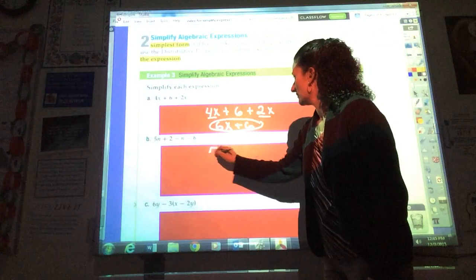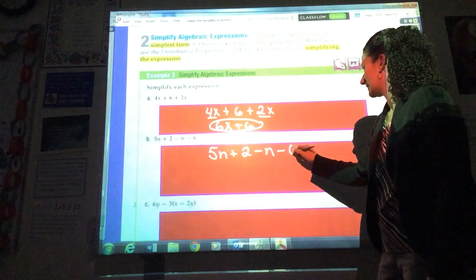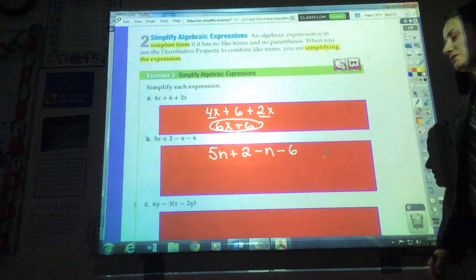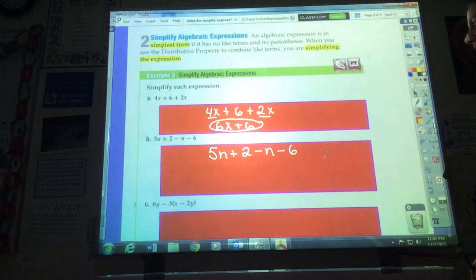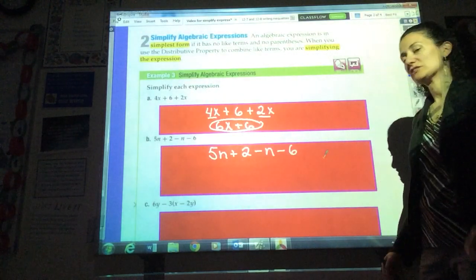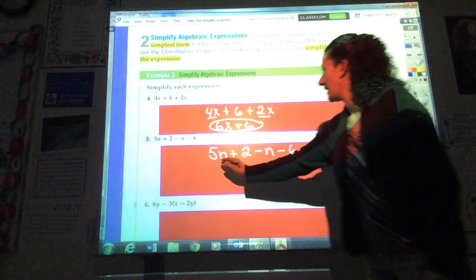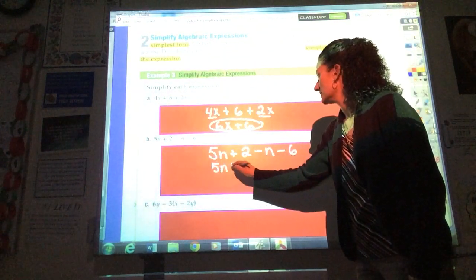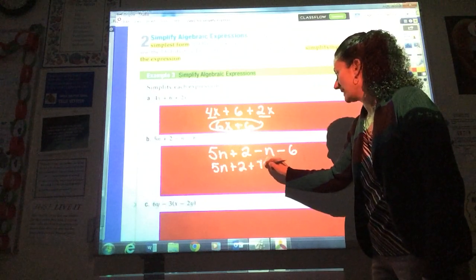Take a look at this one. 5n plus 2 minus n minus 6. In this expression, we have something different. We've got subtraction signs. I've got to be careful about that. One of the first steps you could take is to change any numbers right behind the subtraction sign to the opposite sign. So I'm going to rewrite this as 5n plus 2 plus negative n or negative 1n.